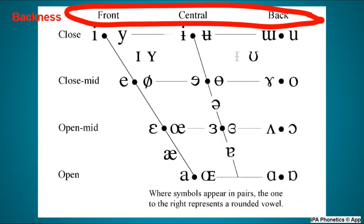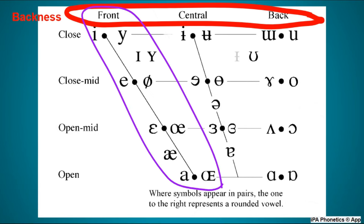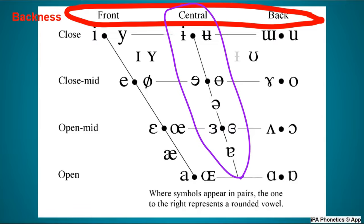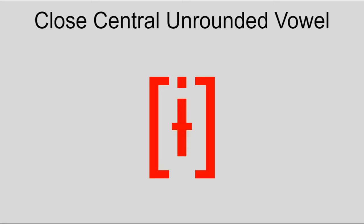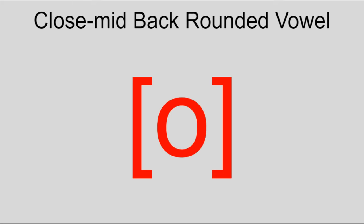The second word in a vowel's name is its backness, or how far back the tongue is. There are basically three columns: front like E and AH, central like schwa and barred U, and back like O and back O.